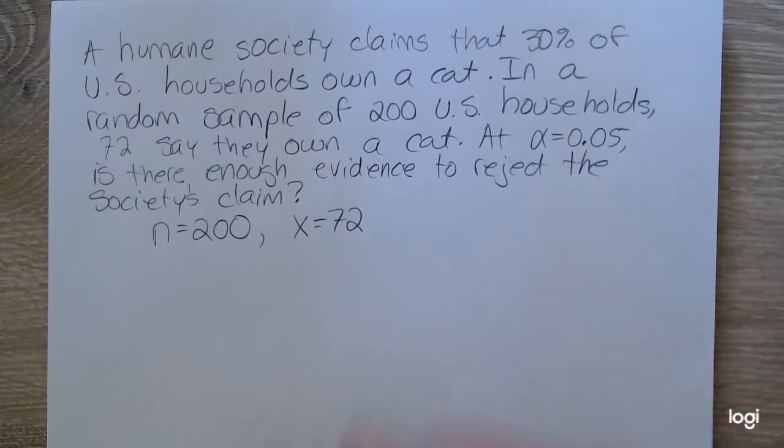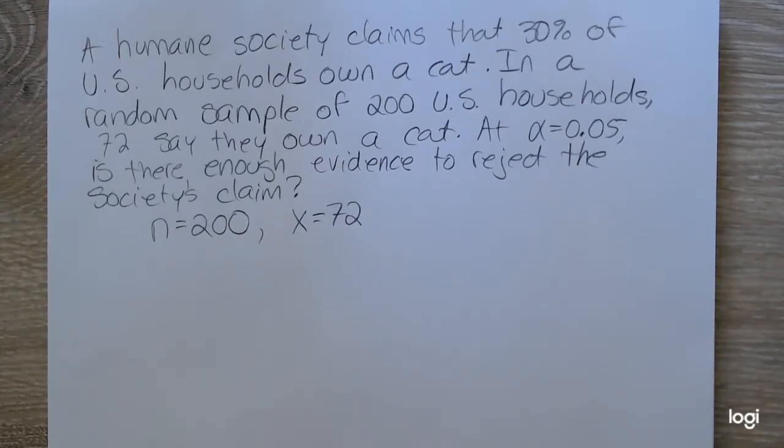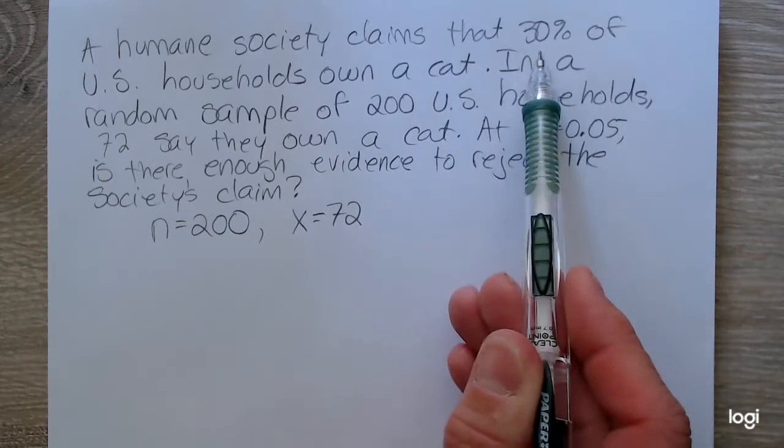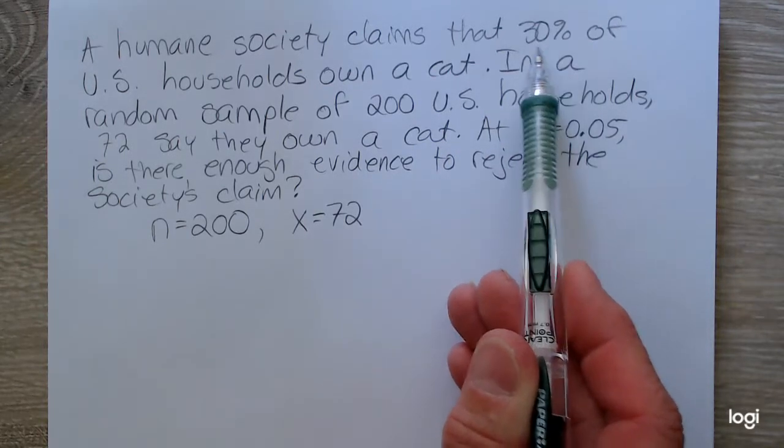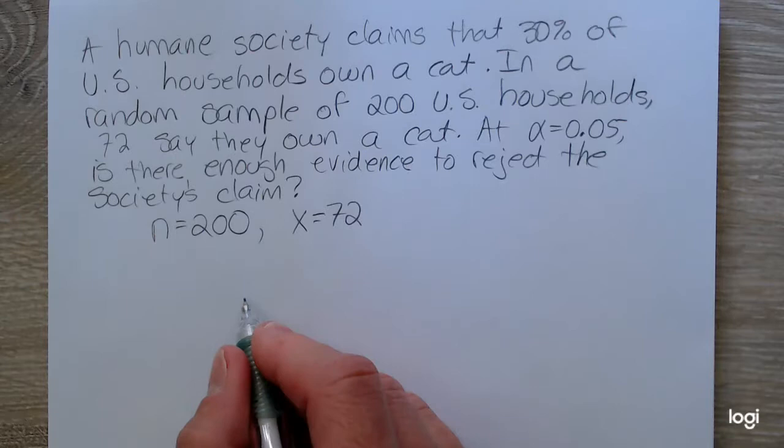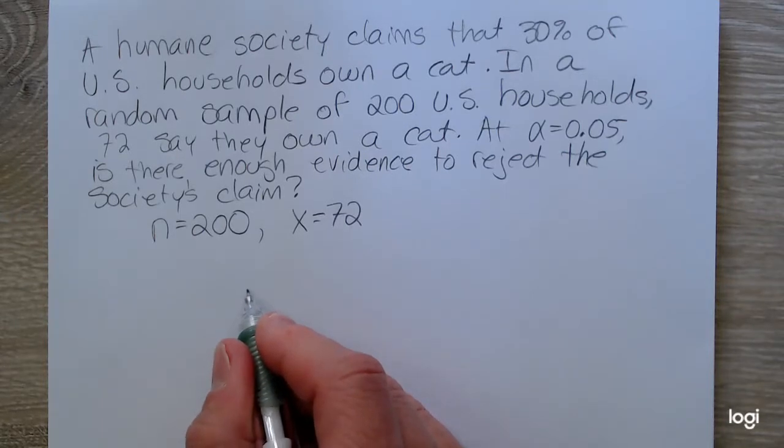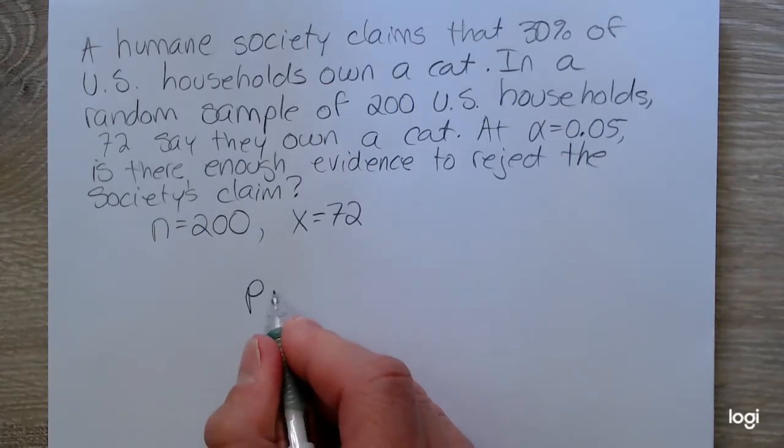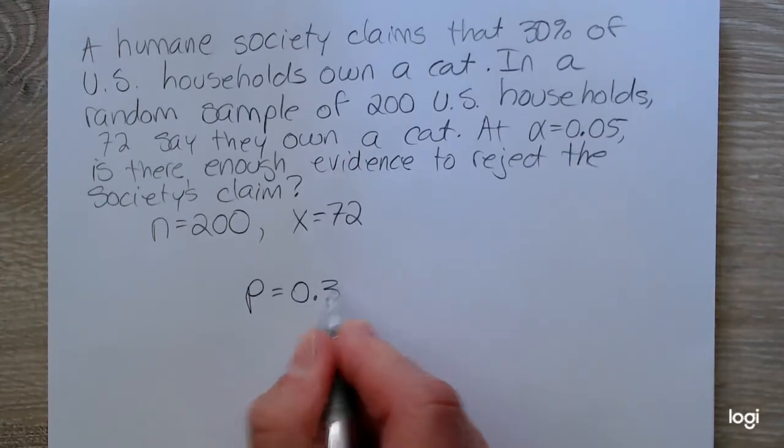And our level of significance is 0.05, so we need to set up the null and the alternative and make sure that the conditions are met to use the normal approximation. The claim is that the proportion is 0.3, or 30%. So writing that as a statement in terms of the parameter P, that will be P is equal to 0.30.